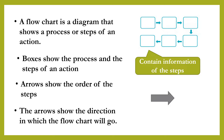In this diagram, boxes show the process and the steps of an action. The arrows appearing in between the boxes show the order of the steps taking place. Basically, the order of the steps are from beginning to the end. The arrows show the direction in which the flow chart will go.